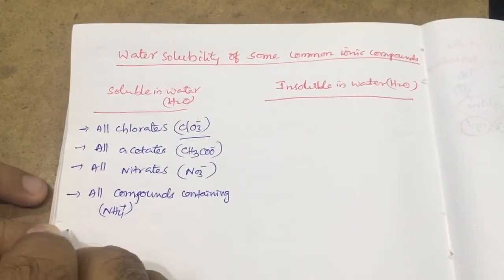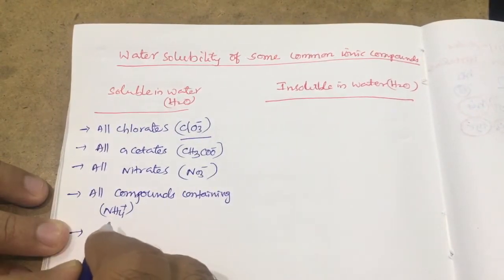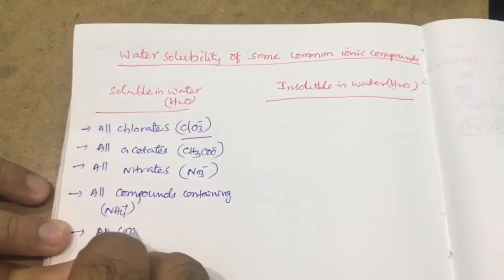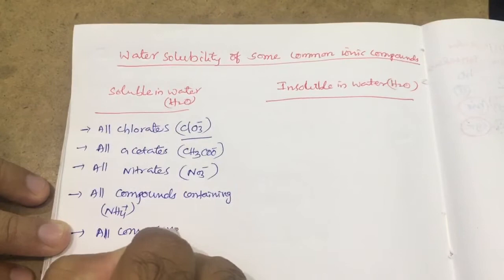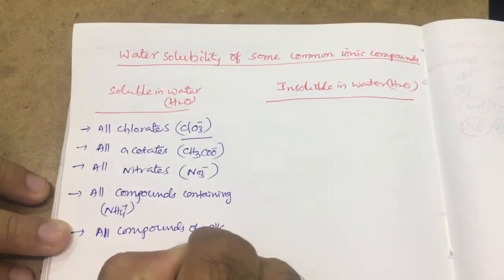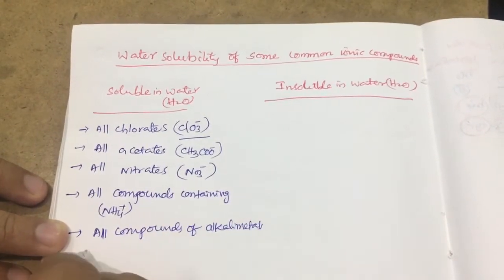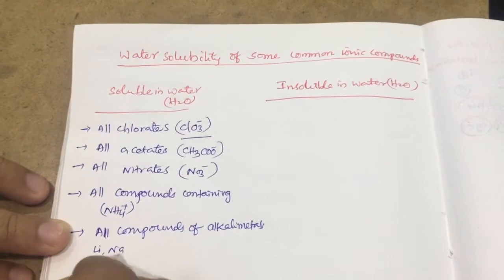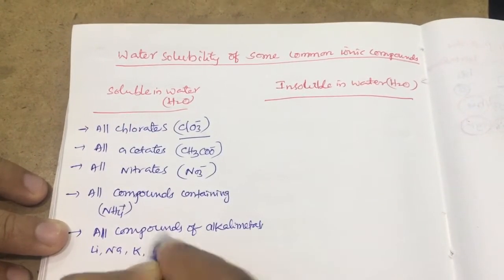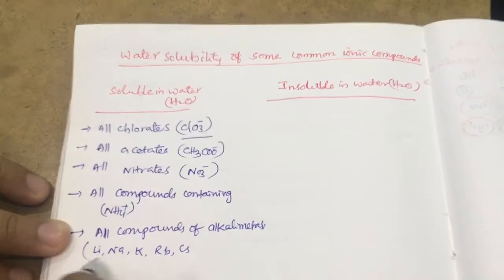One more soluble compound is all compounds of alkali metals. What are the alkali metals? Lithium, sodium, potassium, rubidium, cesium. Francium is radioactive, that's why I am not reading here.